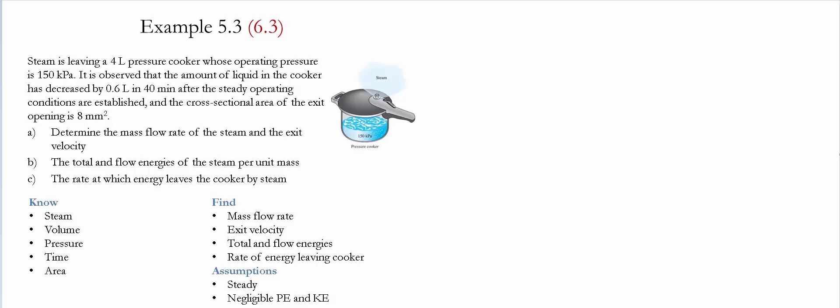Steam is leaving a 4-liter pressure cooker whose operating pressure is equal to 150 kilopascals. It is observed that the amount of liquid in the cooker has decreased by 0.6 liters in 40 minutes after steady operation conditions are established. The cross-sectional area of the exit is equal to 8 millimeters squared. We need to determine the mass flow rate of the steam and the exit velocity, the total flow energies of the steam per unit mass, and the rate at which energy leaves the cooker by the steam.